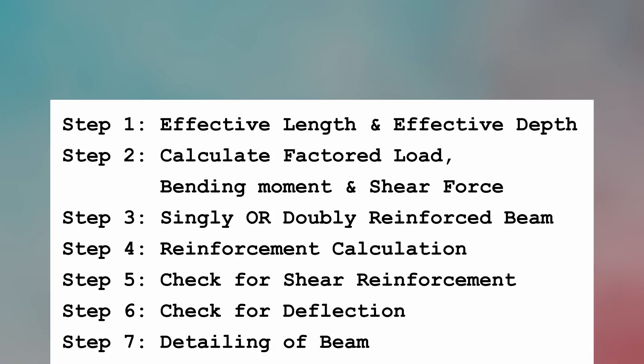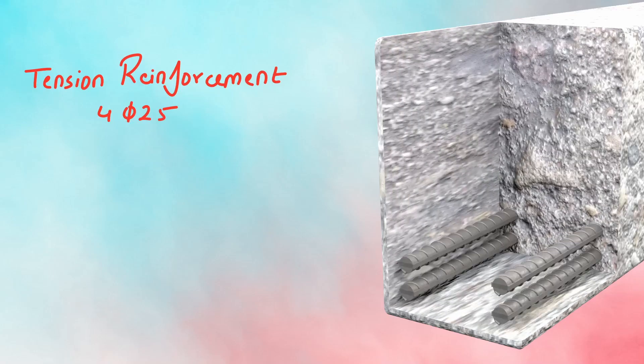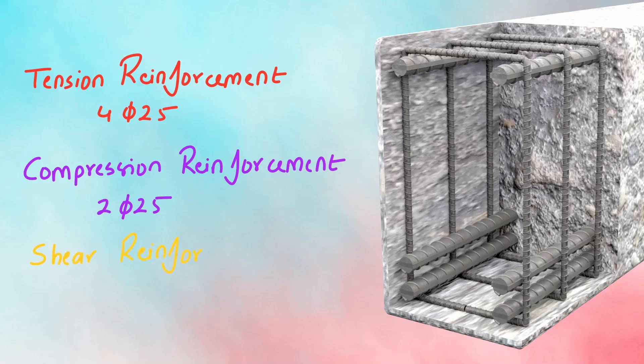The final step is detailing the beam. From the calculations, the main reinforcement is 4 bars of 25 mm diameter in the tension zone, and compression reinforcement is 2 bars of 25 mm diameter. The shear reinforcement is 2-legged φ10 at 175 mm center to center. With this, the design of the doubly reinforced beam is complete. Thank you for watching and see you in the next video.